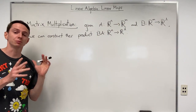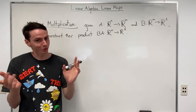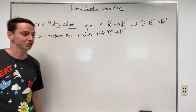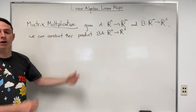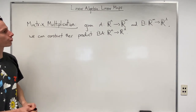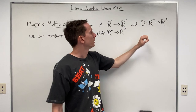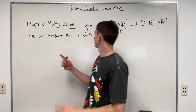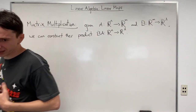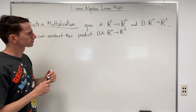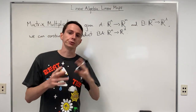On to matrix multiplication. Matrices can not only interact through addition and scalar multiplication, but we can also multiply two matrices together. If we have matrix A going from R^N into R^M, and matrix B going from R^M into R^L, then we can construct their product B times A, which goes from R^N into R^L. To make this intuitive, let's relate it to function composition.